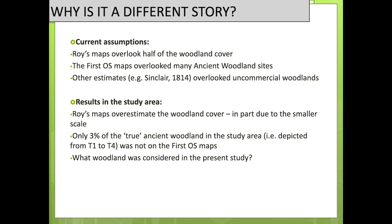The observations in the study area are slightly different from what is often said about woodland cover changes in Scotland in general. It is often said that the Roy map overlooks half of the woodland cover, while in the study area it actually seems to completely overestimate it, in part due to the smaller scale of the survey. It is often read that the first OS maps can overlook ancient woodland sites and that the ancient woodland inventory is missing many woodland sites. However, looking at the woodland cover reconstruction, only 3% of the true ancient woodlands in the study area were not on the first OS maps — a very small percentage explainable by accuracy differences between estate maps.